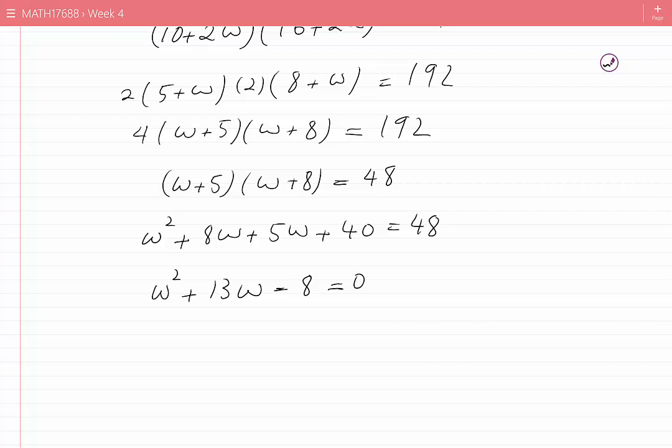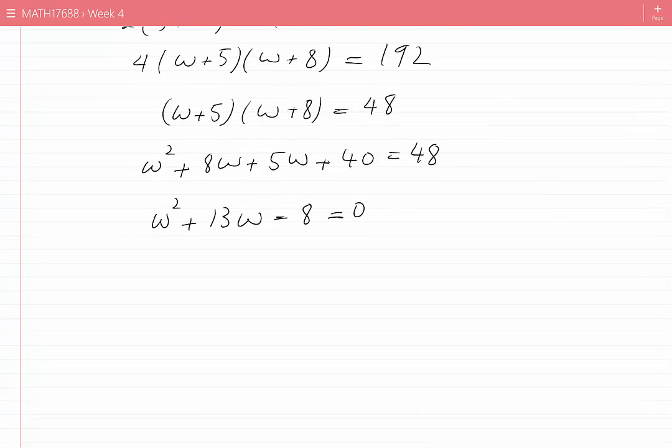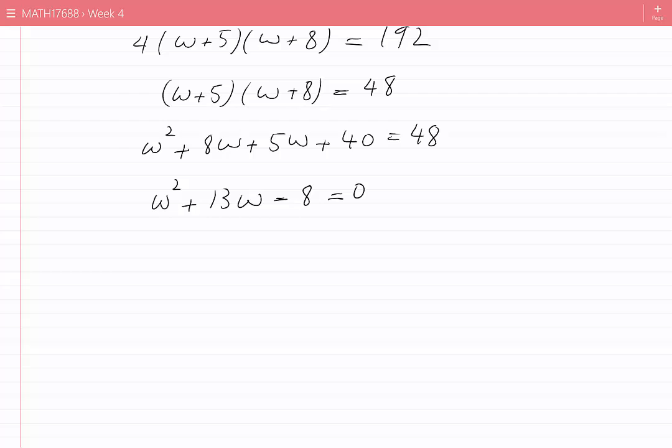I can try to solve this equation by factoring or completing the square, but I would like to use the quadratic formula. Factoring would not work in this particular case because the discriminant is not a perfect square. The discriminant, which is B² minus 4AC, is 13² minus 4 times 1 times (-8), which is 201 and is not a perfect square. As a result, it is not possible to factor this equation using whole numbers only.